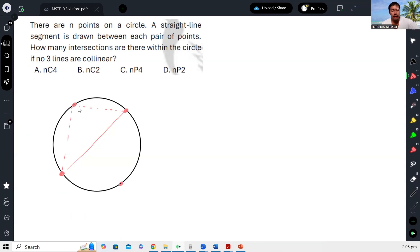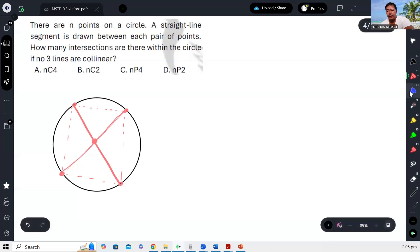So ibig sabihin the minimum number na kailangan natin is actually four points, kasi that's the only time we can create—although meron ditong line segment, meron din ditong line segment, pero itong specific line segments na eto, yung dalawang to, they will intersect at one, no? They will have one intersection.